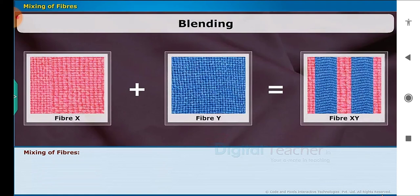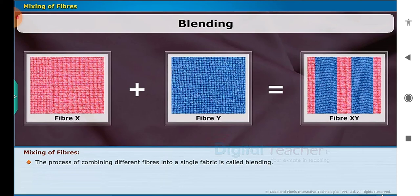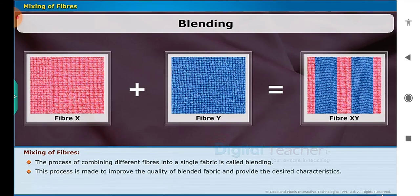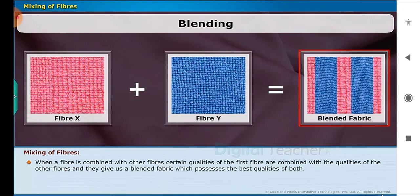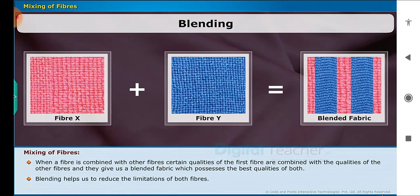Let us study about the mixing of fibers. The process of combining different fibers into a single fabric is called blending. This process is used to improve the quality of blended fabric and provide the desired characteristics. Long fibers cannot be used directly in that process, so they are cut into smaller staple fibers before blending. When a fiber is combined with other fibers, certain qualities of the first fiber are combined with the qualities of the other fibers, giving us a blended fabric which possesses the best qualities of both. Blending helps us to reduce the limitations of both fibers.